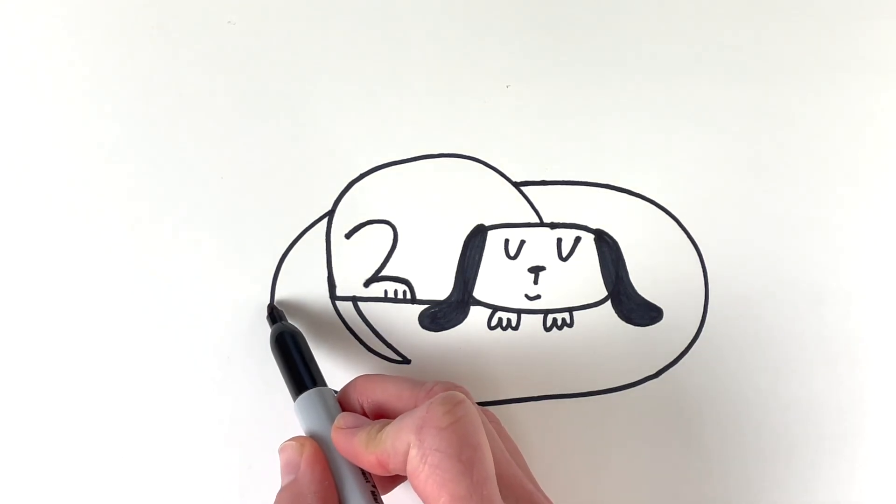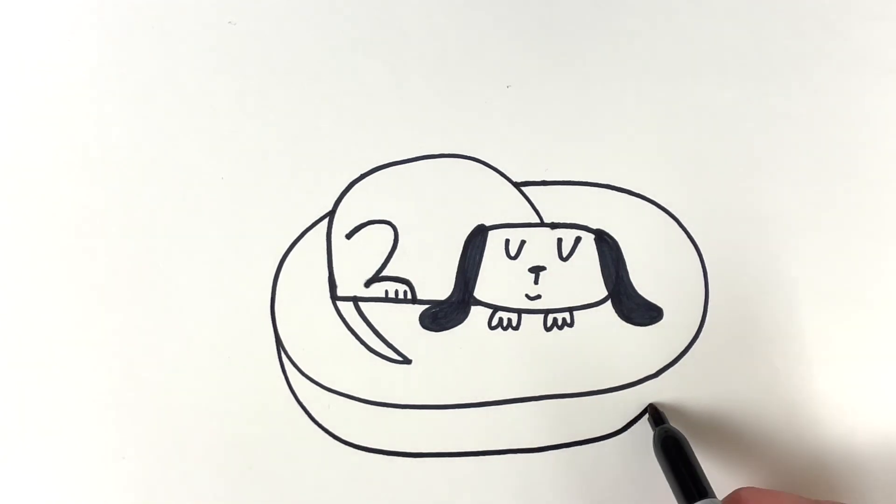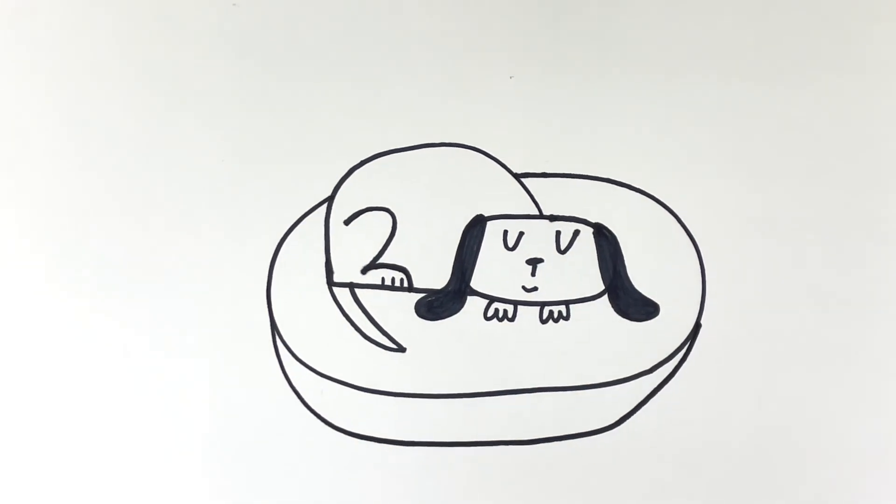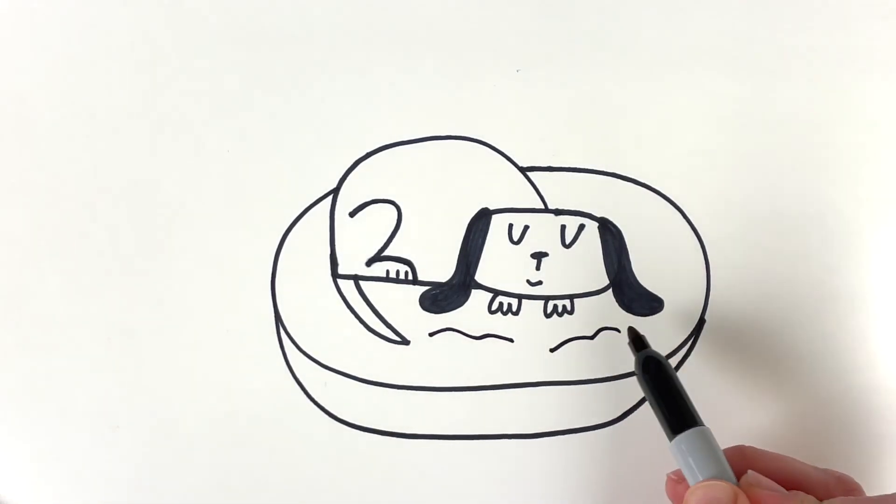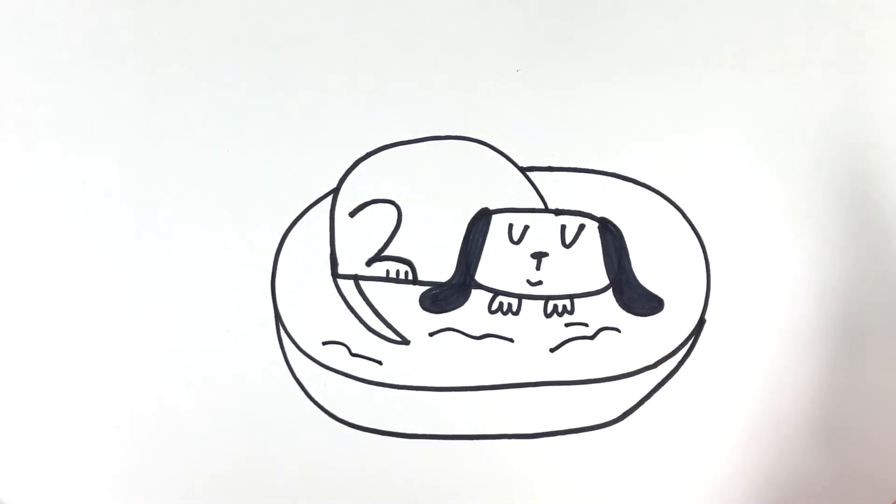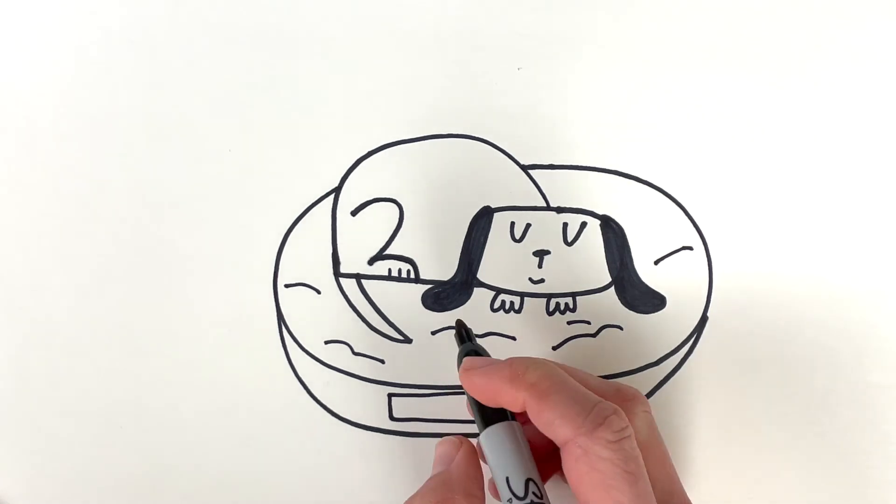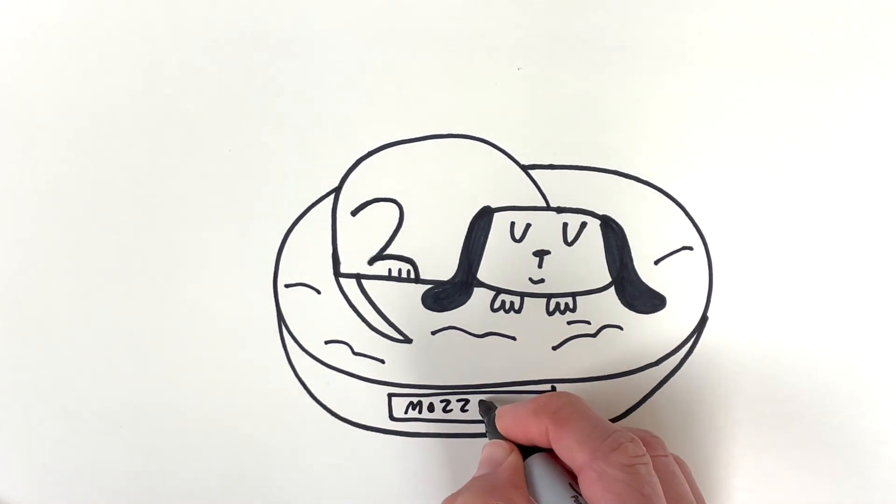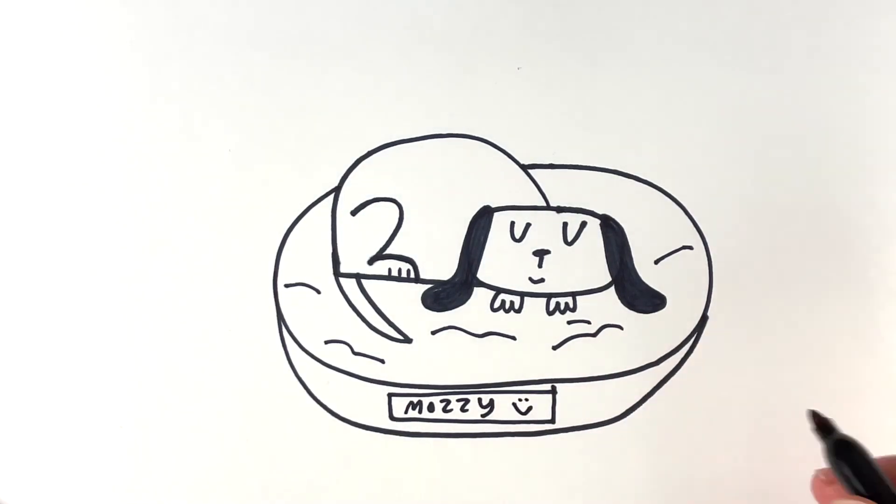So I'm going to start here. And I'm just going to add like the front part of the bed. It'll just give it a little bit of dimension there. And maybe I'll add a little bit of like cushion marks, weighted down in there. And you could write a name for your doggy on the puppy bed. All right. I'll just write Mozzie. And put a happy face. Because I have extra room.